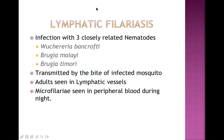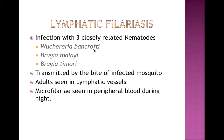Now let's discuss lymphatic filariasis. There are three worms that can cause it: Wuchereria bancrofti, Brugia malayi, and Brugia timori. The most common and prevalent among them is Wuchereria bancrofti, so we will mainly focus on this one. The adult worms live in the lymphatic channel or lymphatic circulation.